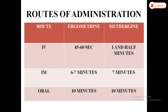Routes of administration: IV, IM, and oral. If given IV, the drug acts within 45 to 60 seconds for ergometrine; methergine acts in about 1.5 minutes via IV. If given intramuscularly, both ergometrine and methergine act within 6 to 7 minutes.